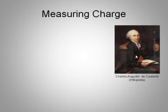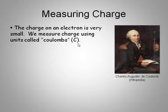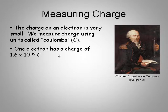We can measure charge in a unit called the Coulomb, named after this fellow right here. Its symbol is a capital C, just like Celsius is, so we have to understand the context in which it's being used so that it means Coulombs and not Celsius. An electron, for example, has a very small charge — about 10 to the minus 19 Coulombs.